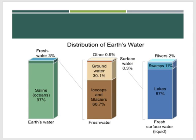Before moving on to the pollution part, let's see the distribution of Earth's water. From this graph, the distribution of water on the Earth's surface is extremely uneven. Only 3% of water on the surface is fresh; the remaining 97% resides in the ocean. Of fresh water, 69% resides in glaciers and 30% is underground, and less than 1% is located in lakes, rivers, and swampy places.